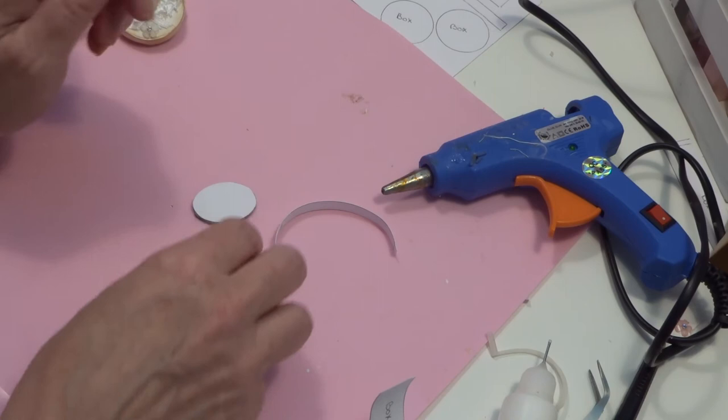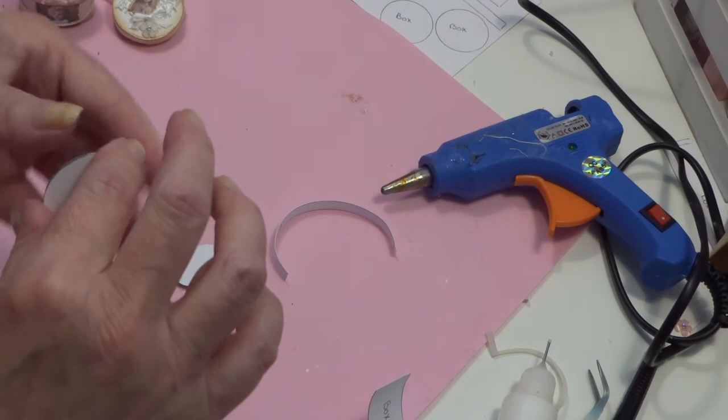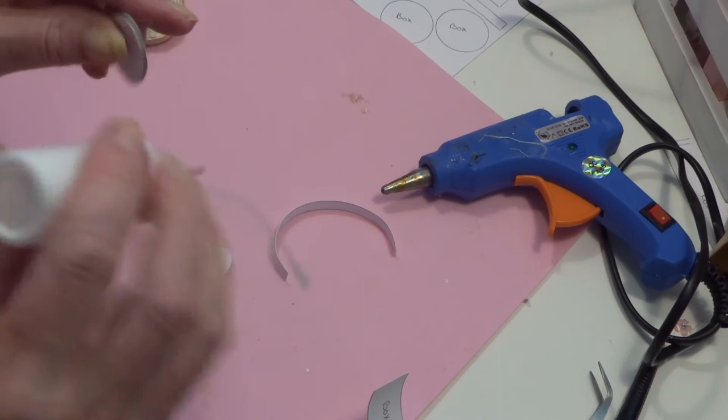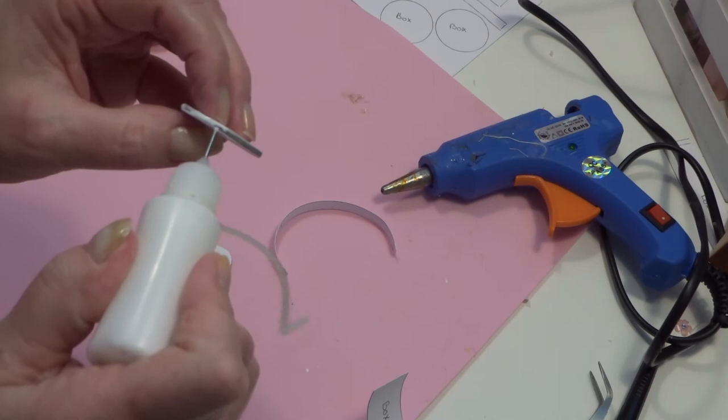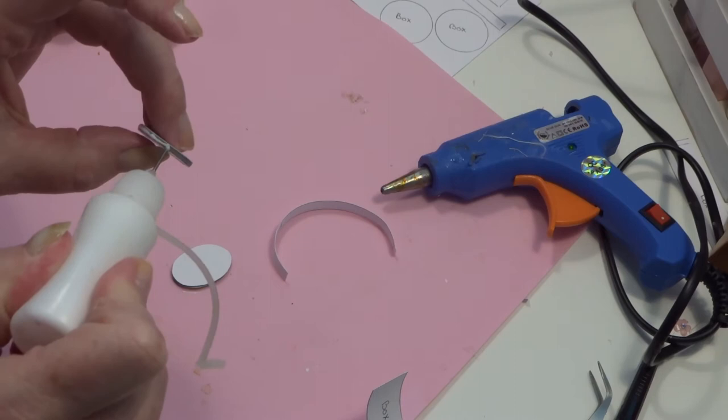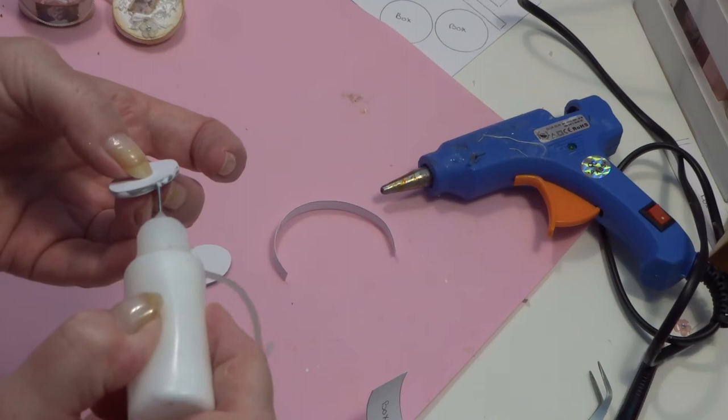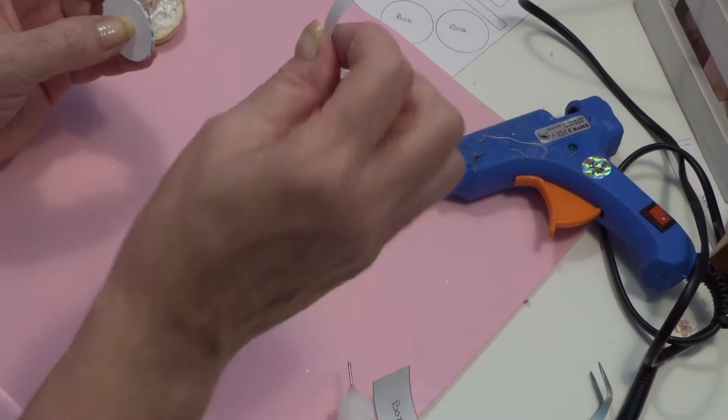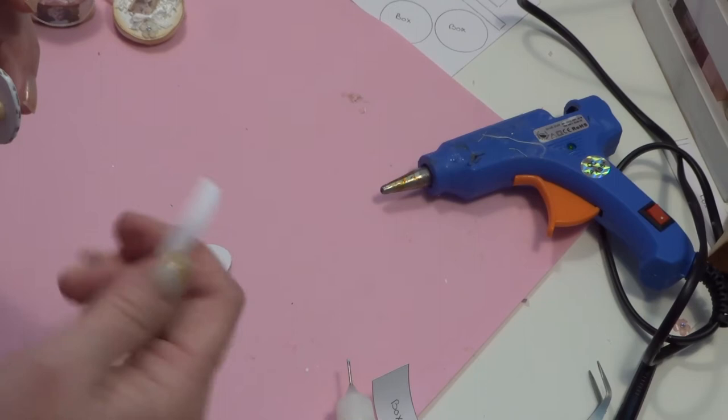So we start with the lid. It's not dry yet, but I hope it will work. Then we put some glue on the sides of this cardboard, and we take the small one because that is the lid.